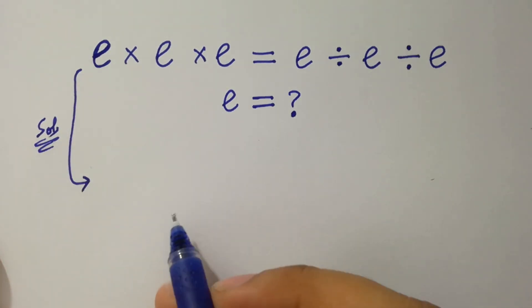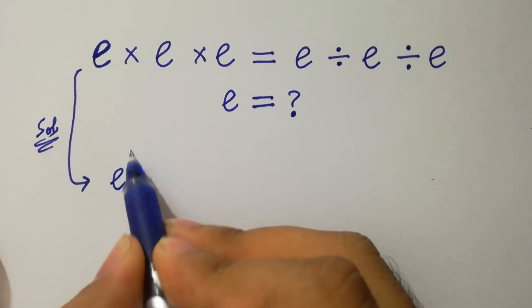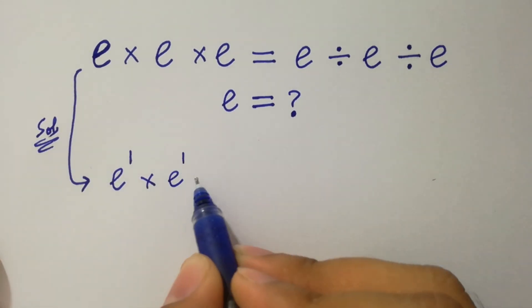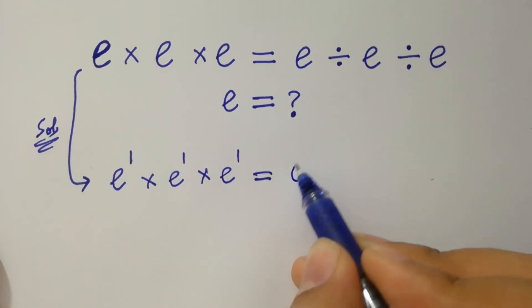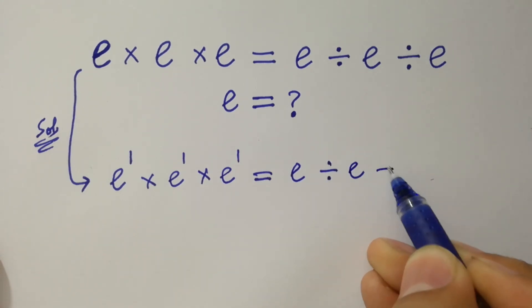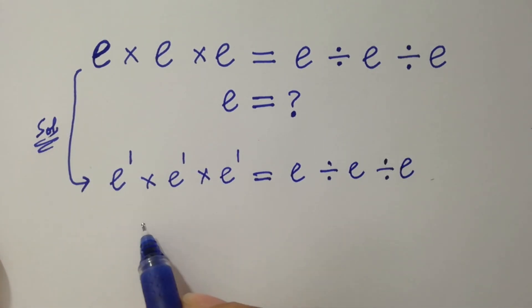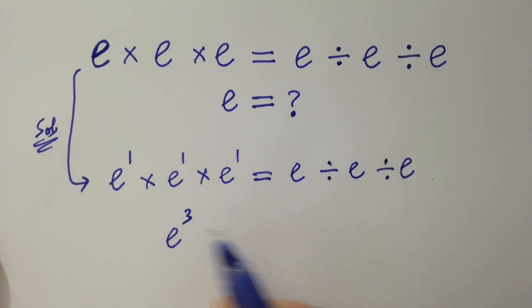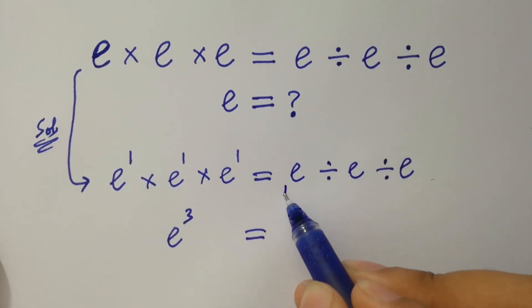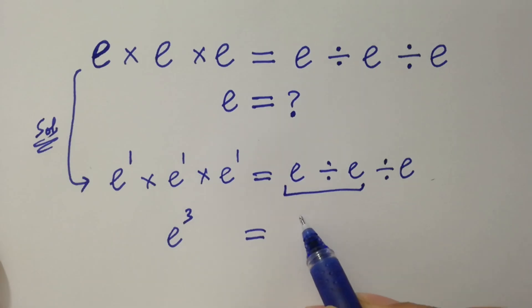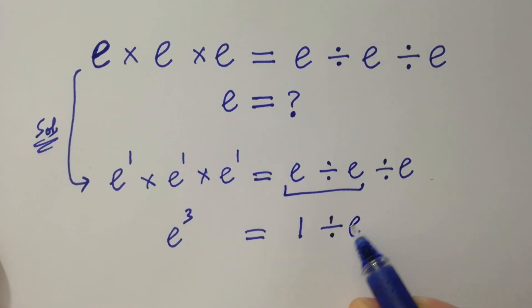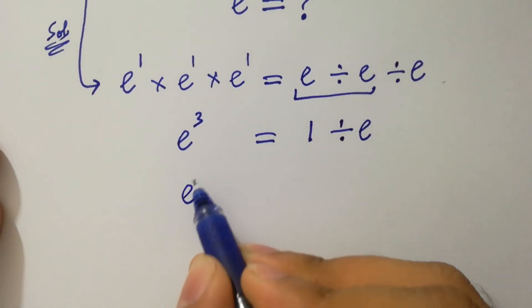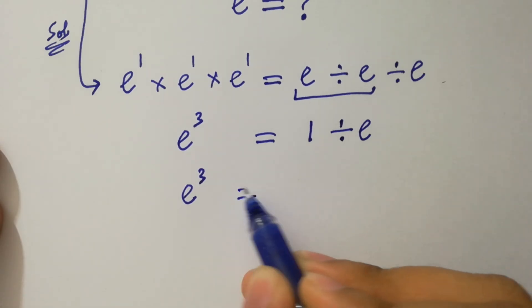On the left hand side, this is the same as e to the power 1 times e to the power 1 times e to the power 1. On the right hand side, e divided by e will be equal to 1, so it will be 1 divided by e. Therefore, e cubed equals 1 over e.